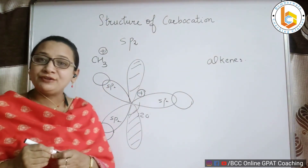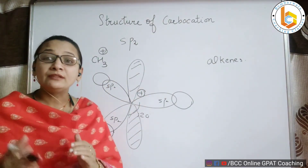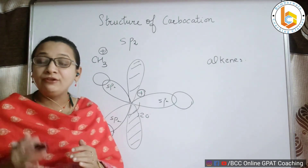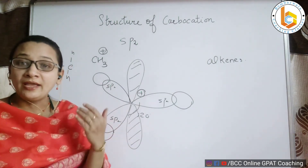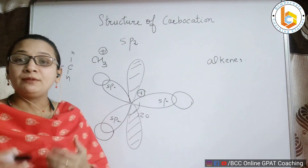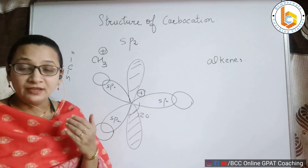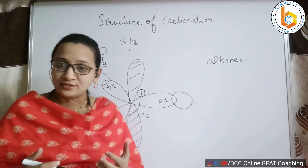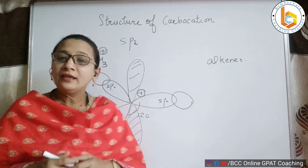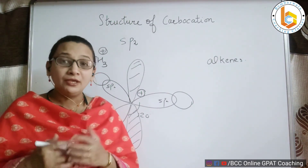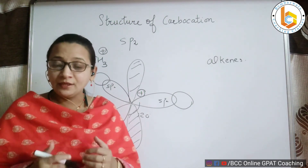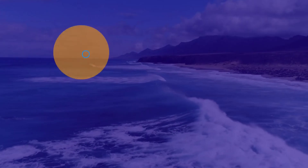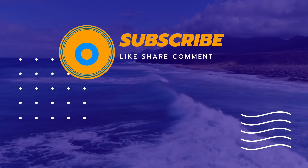In our next video we will be talking about the stability of carbocation. We will be discussing why tertiary is more stable than secondary, which is more stable than primary. So let us talk about that in our next video. Keep watching and don't forget to subscribe to this channel.